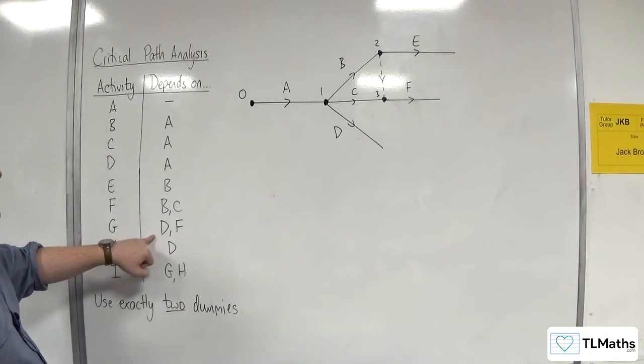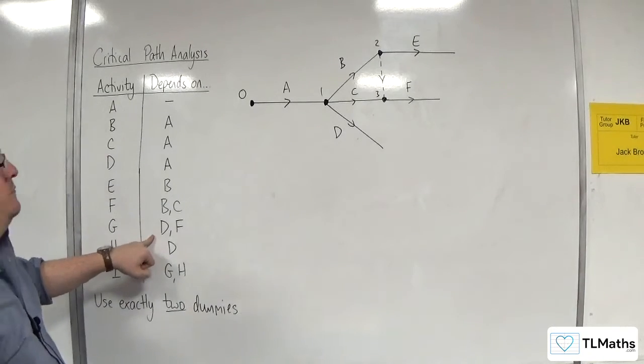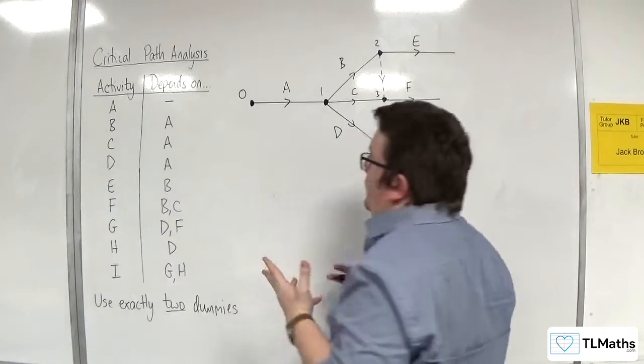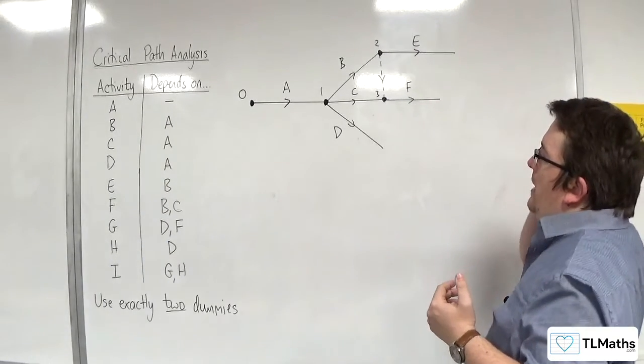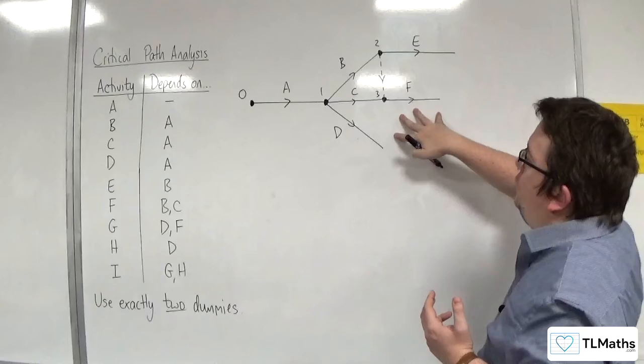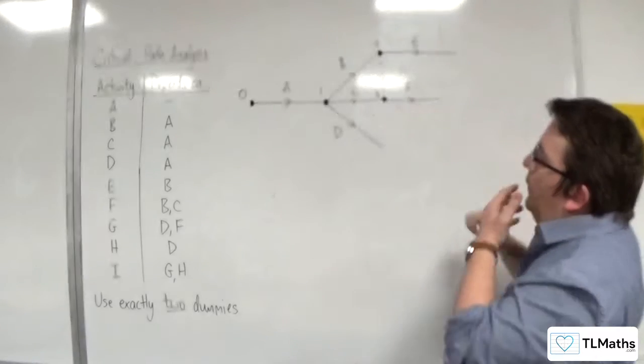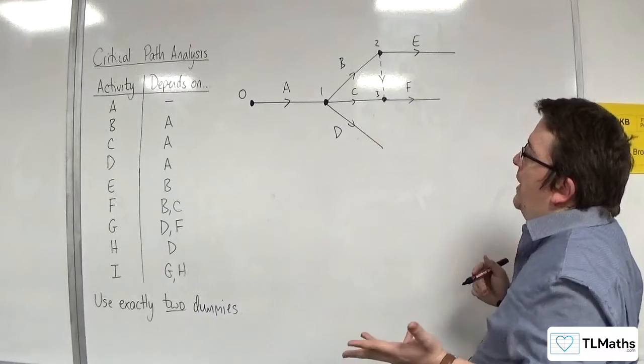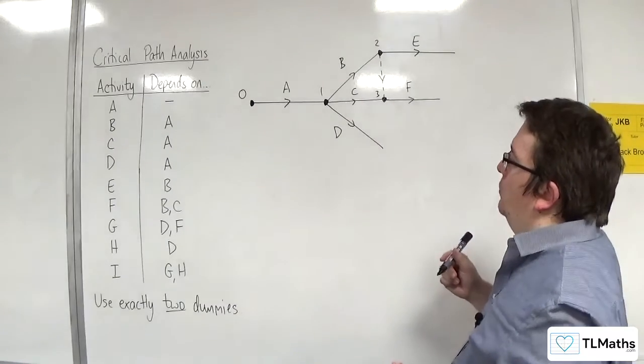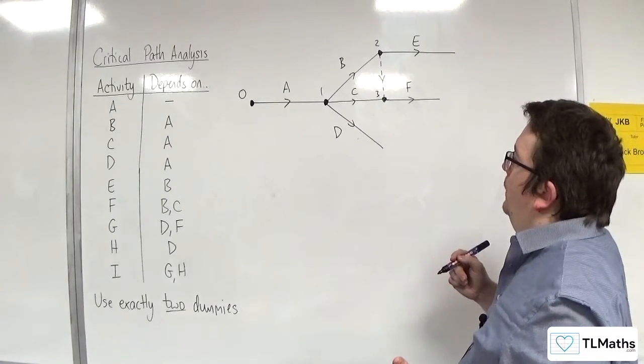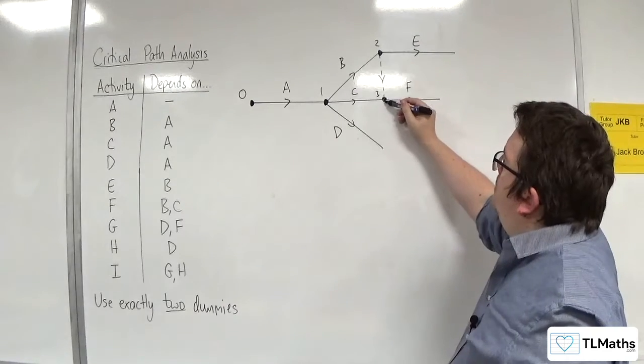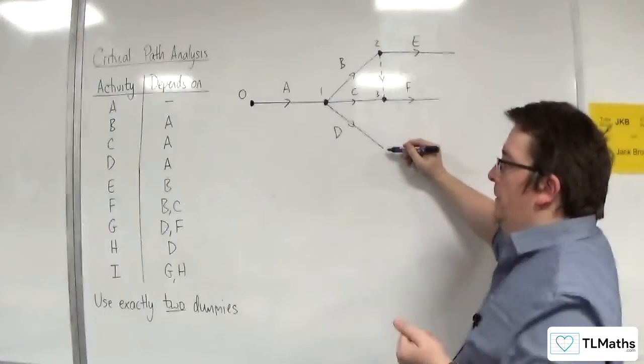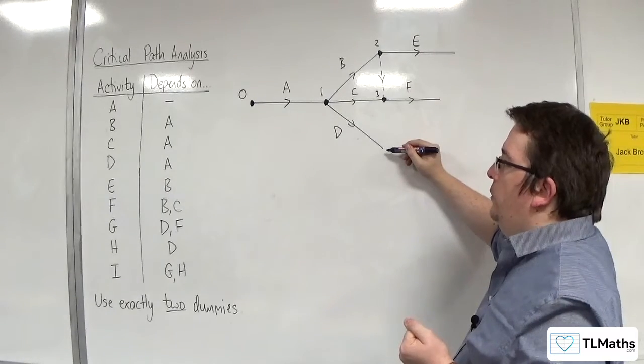Now, G relies on both D and F. So, because G depends on both D and F, I need some way of connecting these two up now. So, how do I do that? Well, I could redraw F coming down here, couldn't I? Okay, so let's do that.